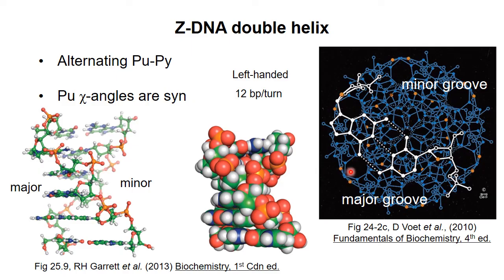The major groove of Z-DNA is shallower than the minor groove, and the helix has 12 base pairs per turn. As for the A-DNA double helix, I just want you to remember the handedness of the helix and the number of base pairs per turn.